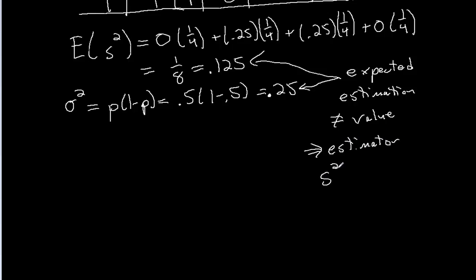Estimator s squared, so one over n times the sum i equals one to n of (xi minus x-bar)², is biased. And that's a term that I'm basically defining by this example. I've got an estimator, s squared is trying to estimate the variance, but when I take the expectation of that estimator, I do not get the actual value of what I'm trying to estimate.